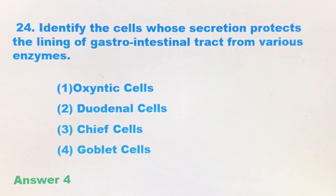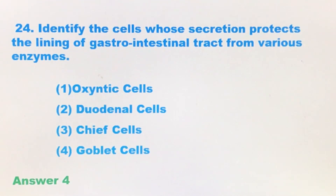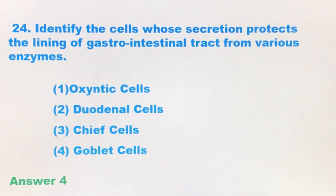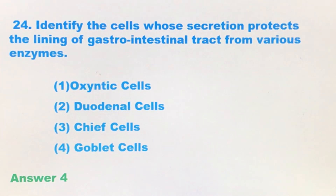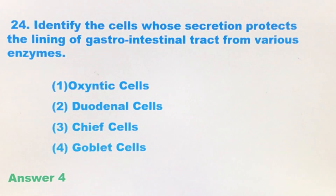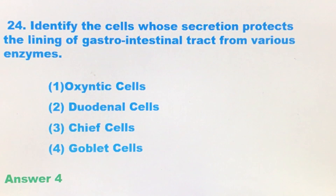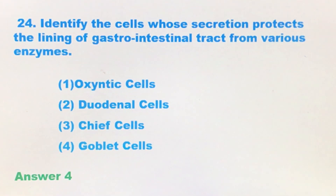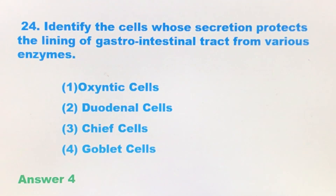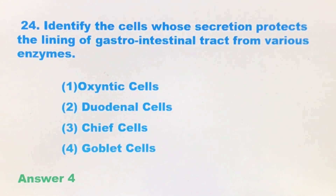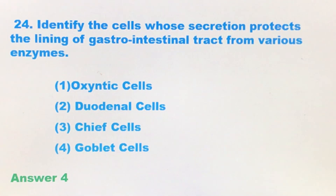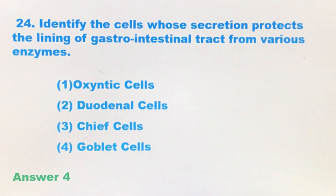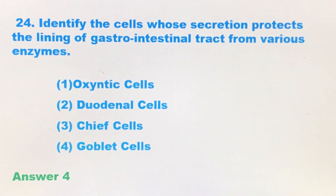Question number 24. Identify the cells whose secretion protects the lining of the gastrointestinal tract from various enzymes. The four options are: the first option is oxygenetic cells, second option is duodenal cells, third option is chief cells, and the fourth option is goblet cells.